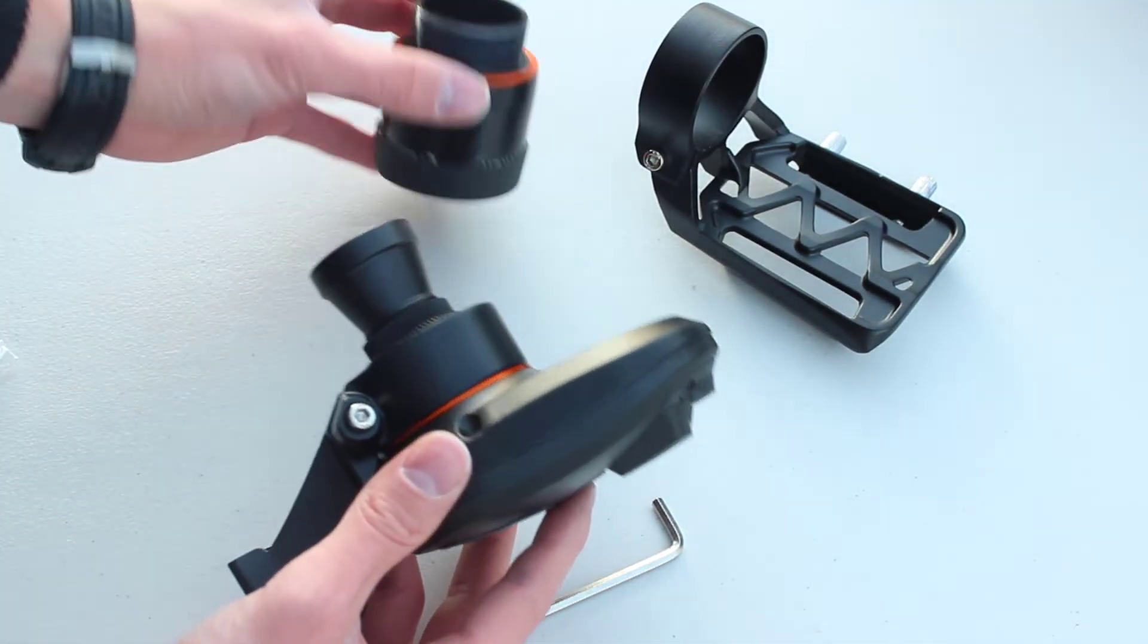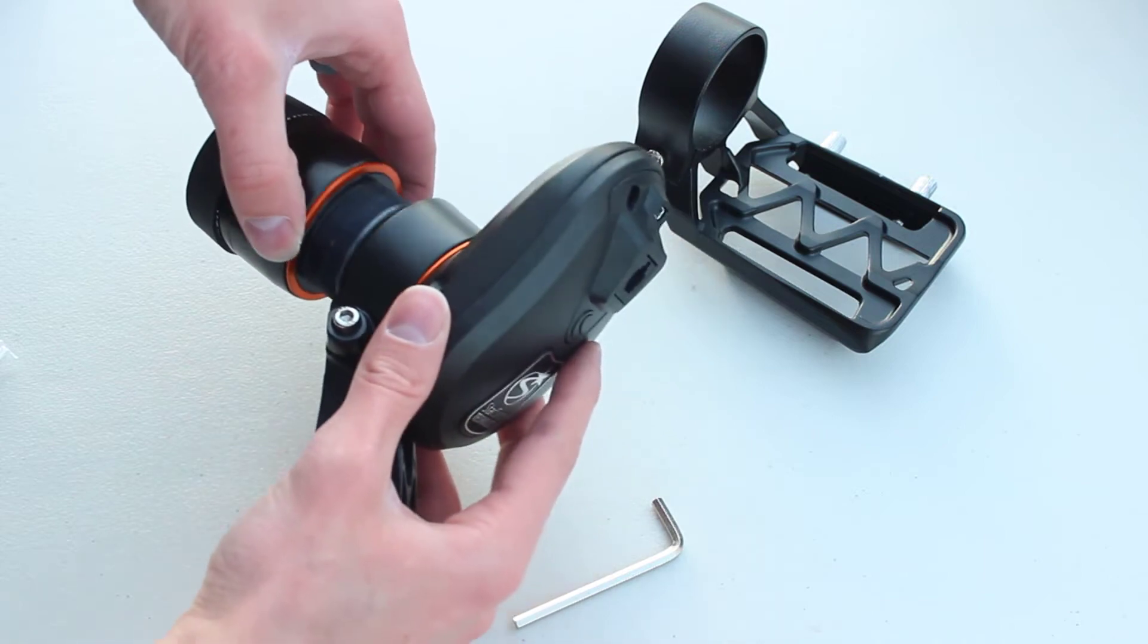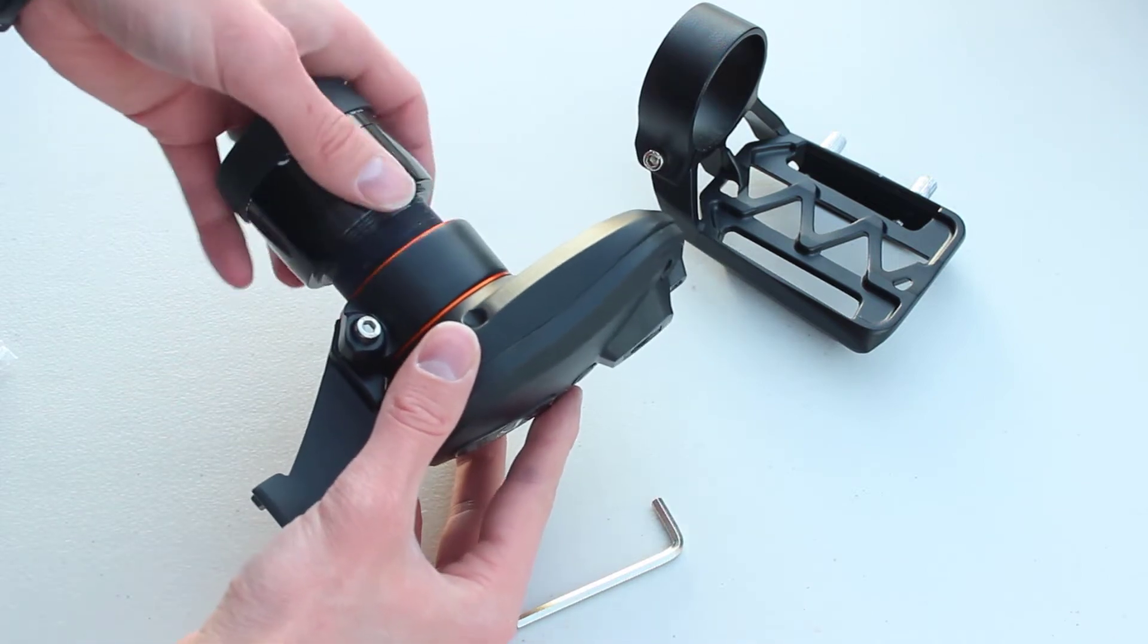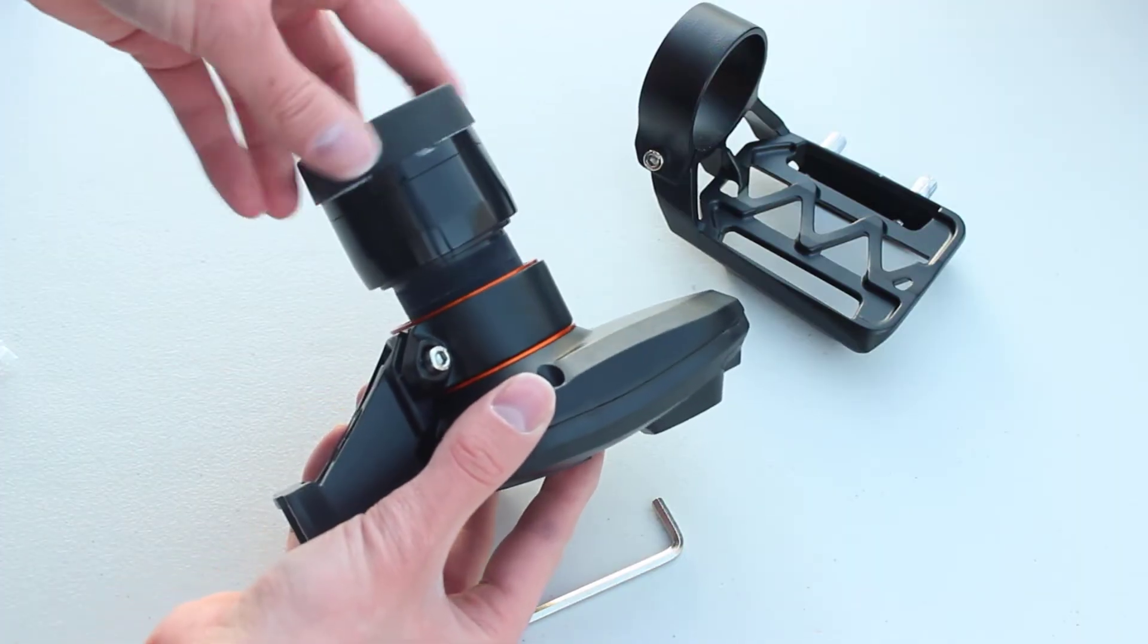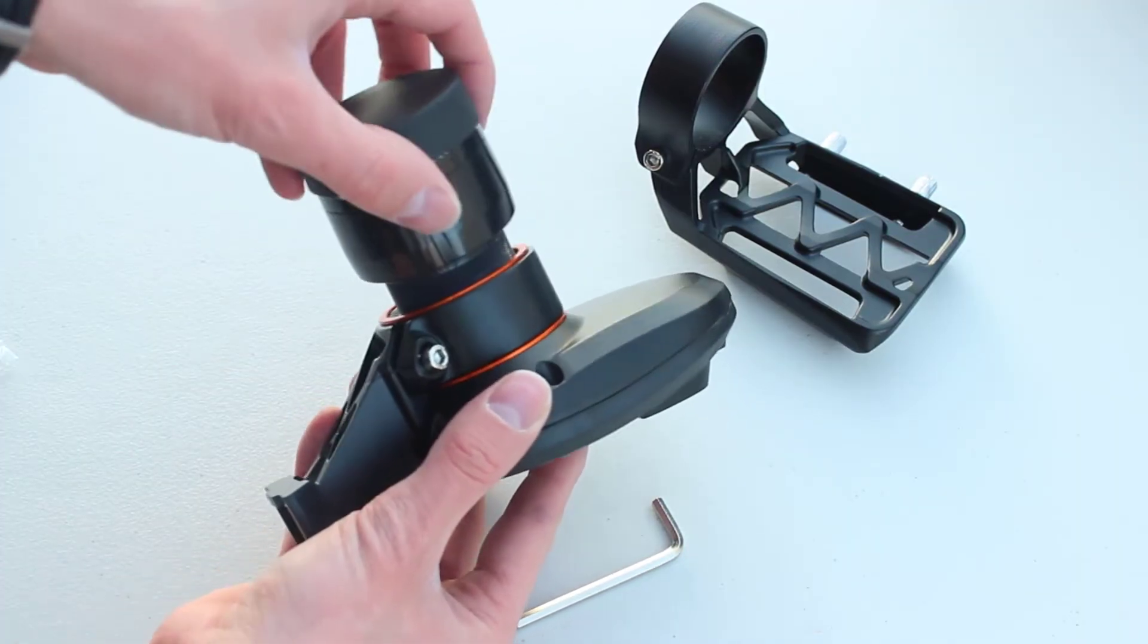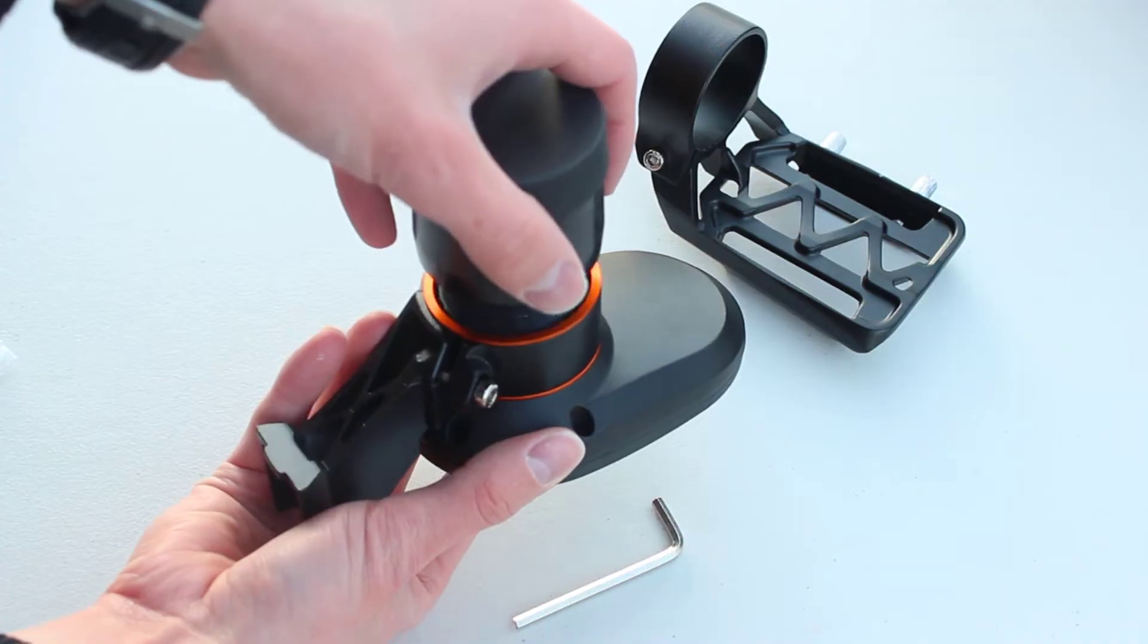And now that we have the bracket on, screw the shroud right back on. And it's a lot of threading, so make sure that stays straight.